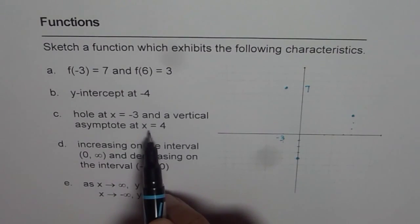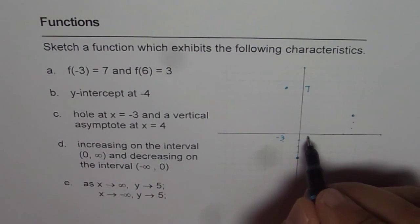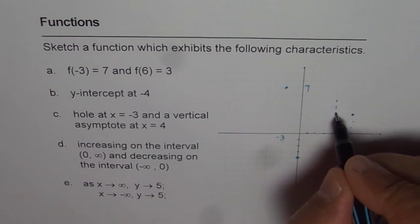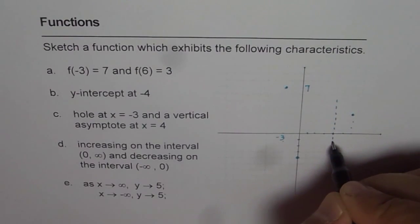Vertical asymptote at x equals 4. So 1, 1, 2, 3, 4. A vertical asymptote here will be a vertical line like this. So that becomes the vertical asymptote at 4.